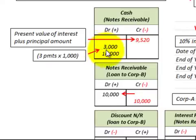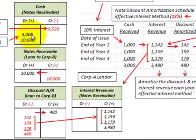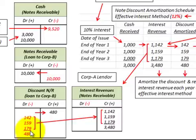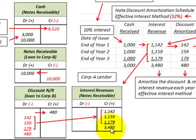To follow up: the $3,000 debit to cash represents three payments of $1,000 each. Adding the discount on notes receivable of $480 as a debit — even though it's a contra account — balances with our interest revenue of $3,480. So the interest revenue of $3,480 on the income statement includes that $3,000 cash received from the three annual payments of $1,000 each.